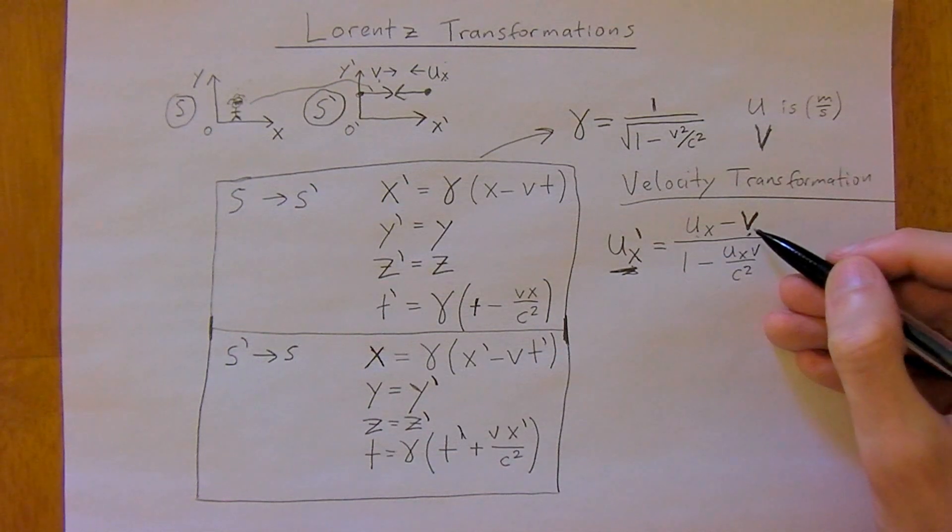V will see UX approaching at UX naught. So these first two are the relativistic velocities, but this third velocity here is with respect to V. V has its own inertial reference frame with a constant velocity, and it will observe a different velocity of this craft than you will.